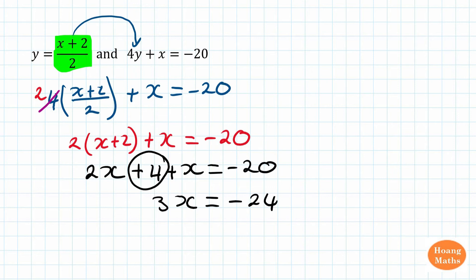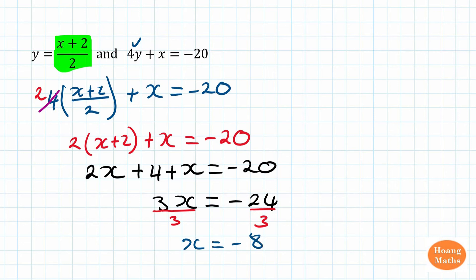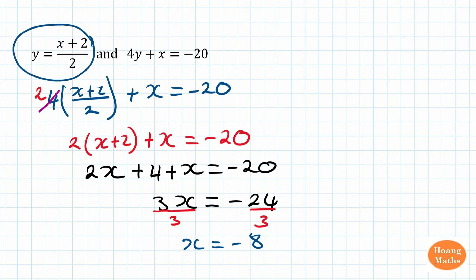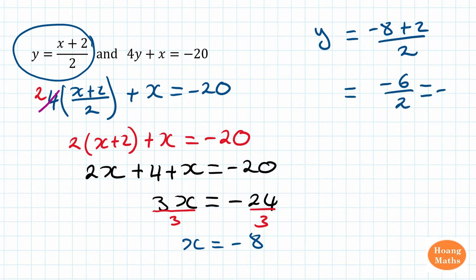The next step is we divide everything by 3. So x is equal to negative 8. Now to find y, we substitute x into either equation, but we'll use y equals (x plus 2) over 2 because it's quicker. So y is equal to negative 8 plus 2 over 2, which is negative 6 over 2, which is negative 3. Therefore, x is equal to negative 8 and y is equal to negative 3.